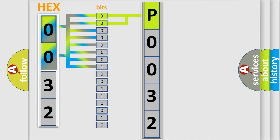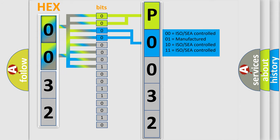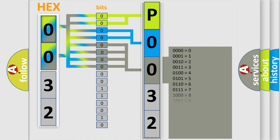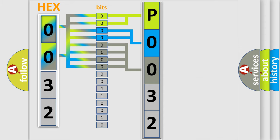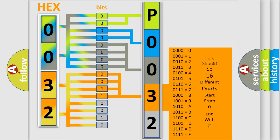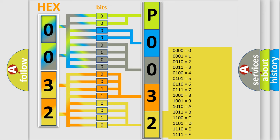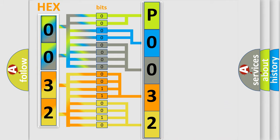The next two bits determine the second character. The last four bits of the first byte define the third character of the code. The second byte is composed of a combination of eight bits. The first four bits determine the fourth character of the code, and the combination of the last four bits defines the fifth character. A single byte conceals 256 possible combinations.